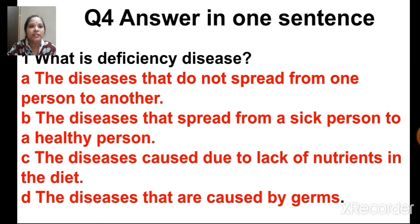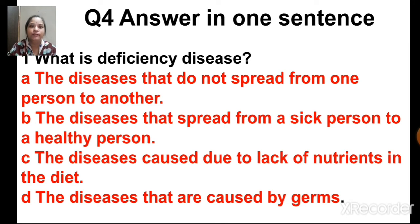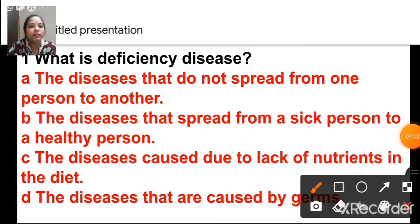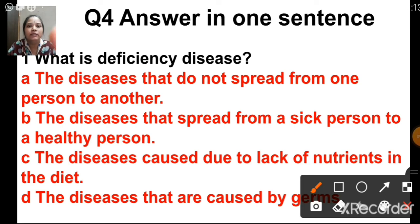Answer in one sentence: what is a deficiency disease? The options are: diseases that do not spread from one person to another; diseases that spread from a sick person to a healthy person; diseases caused due to lack of nutrients in the diet; diseases caused by germs. The correct answer is C — diseases caused due to lack of nutrients in the diet.